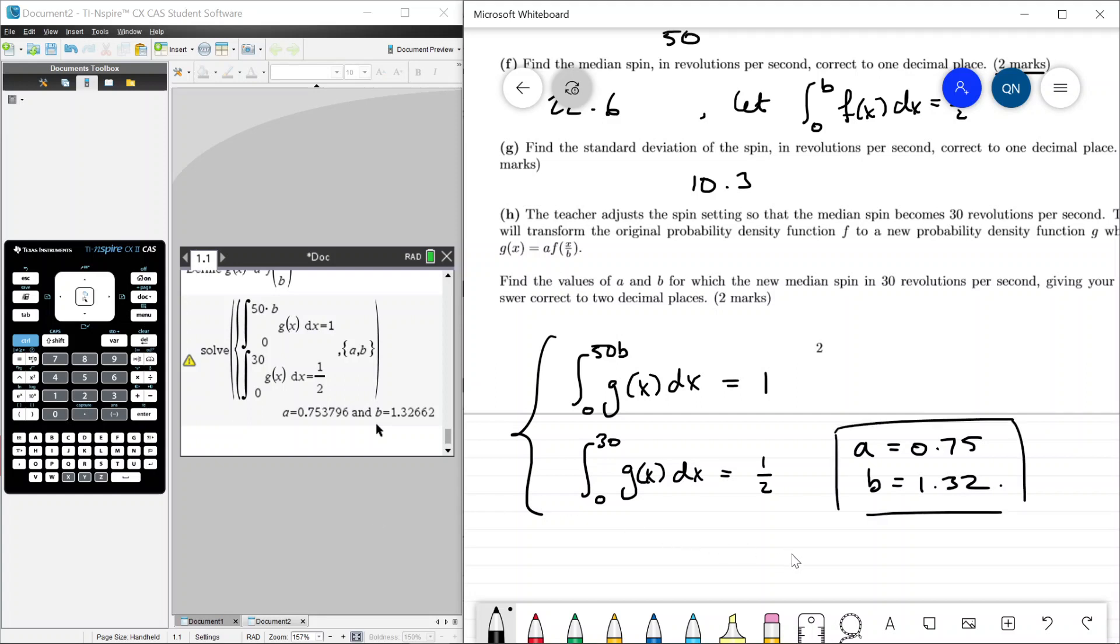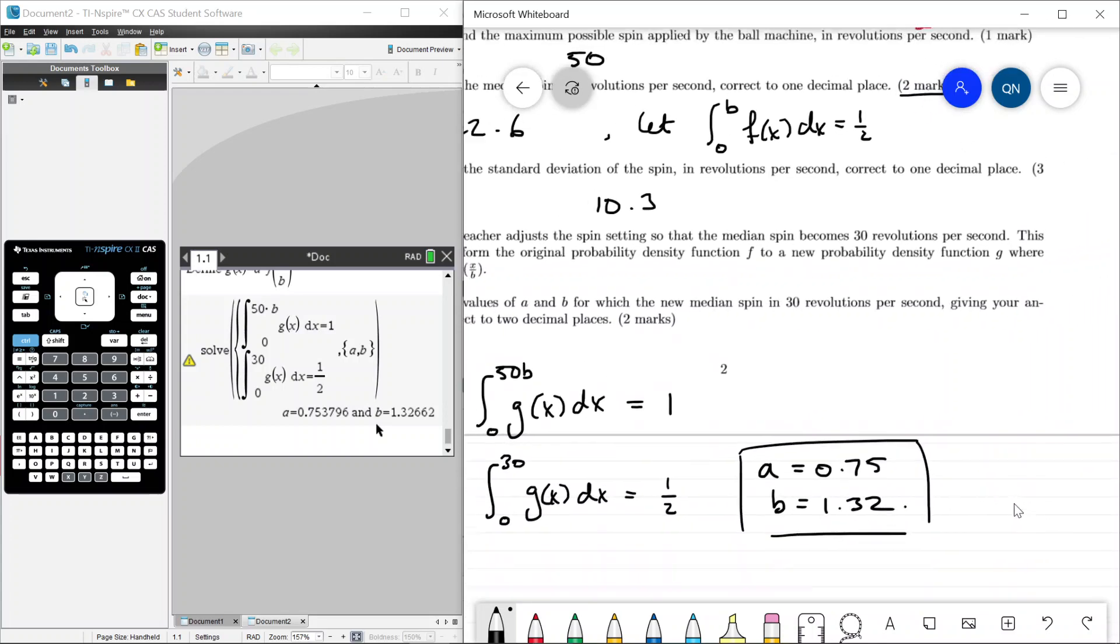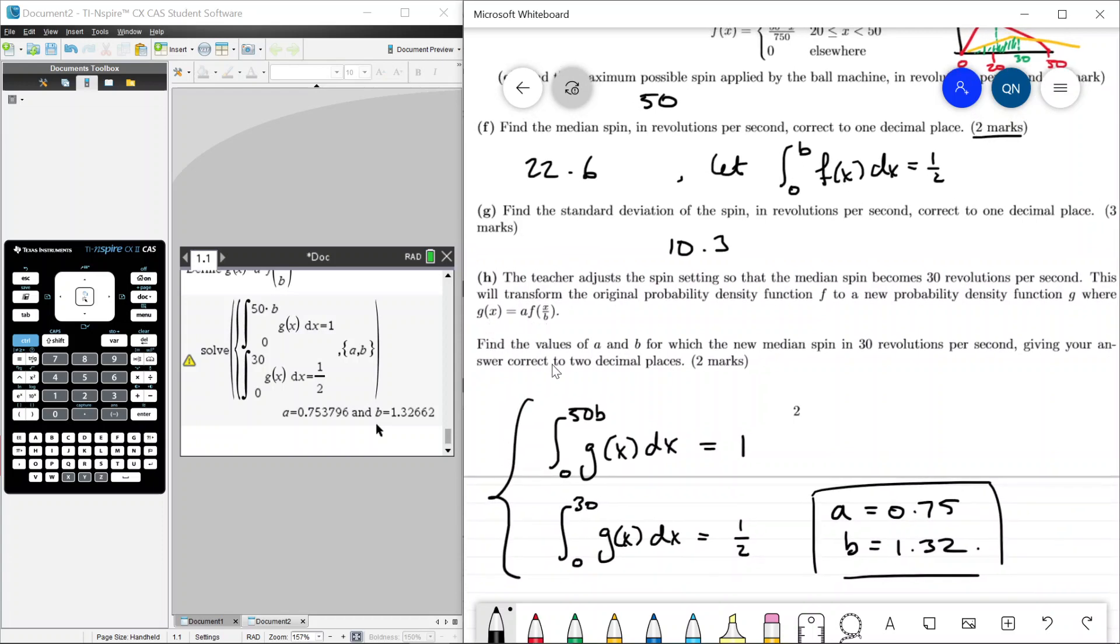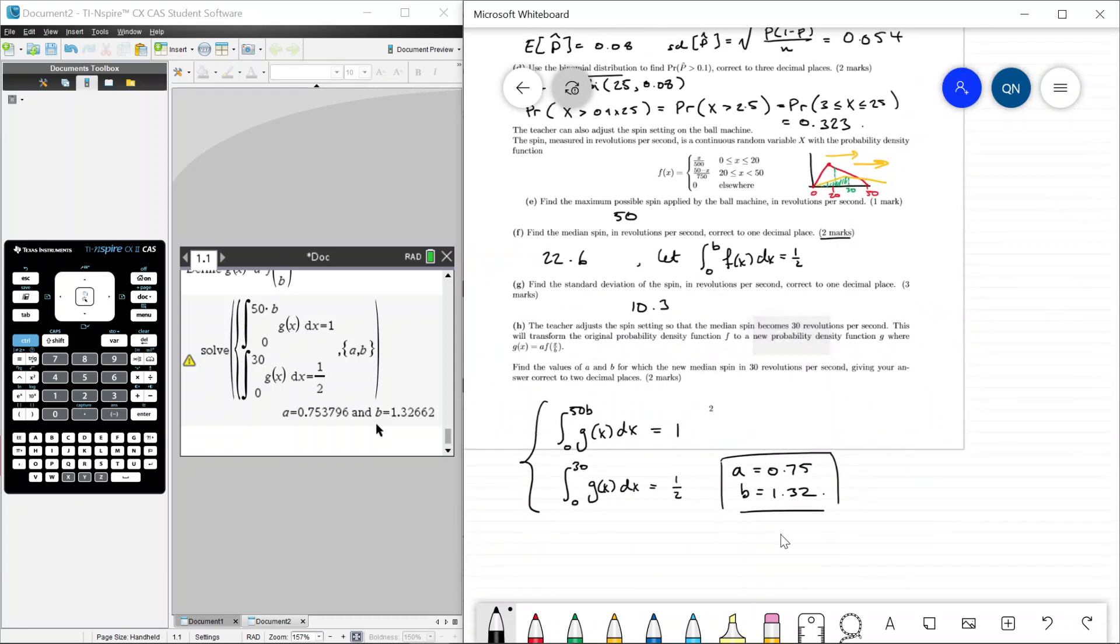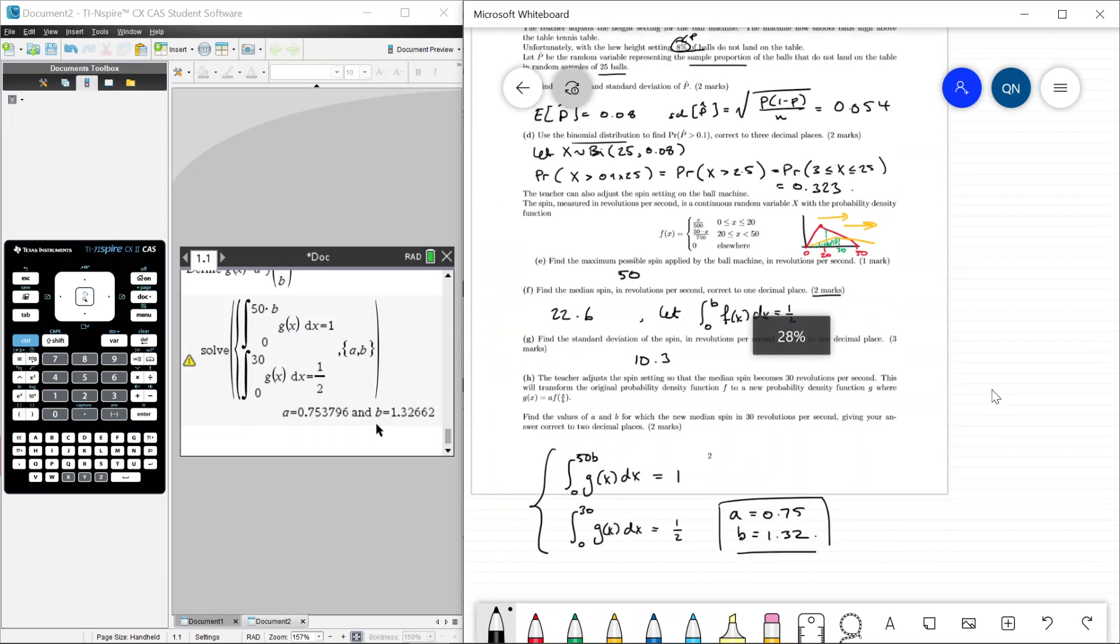So this does make sense because look at the b value. B is 1.32. What does 1.32 mean in the context of this question? It means that we're stretching away from the y-axis because this b value is greater than 1. If it was less than 1, it wouldn't really make sense because we're moving the median closer. We want the median to move further. So that's why it makes sense for b to be greater than 1.